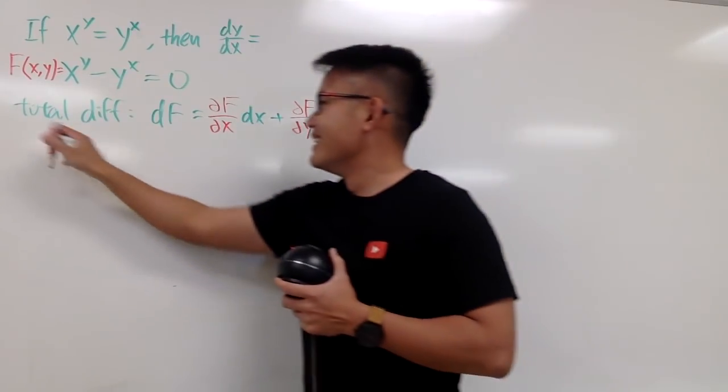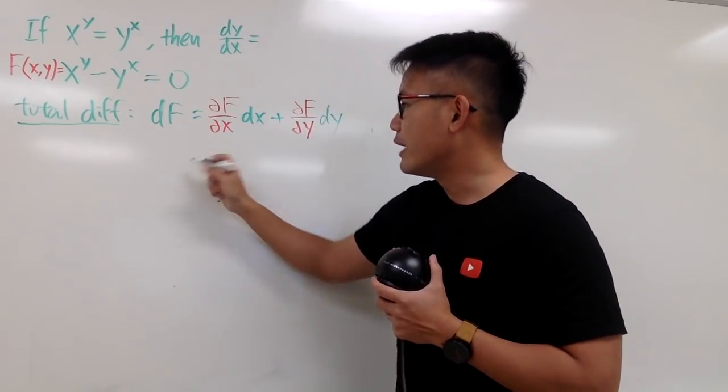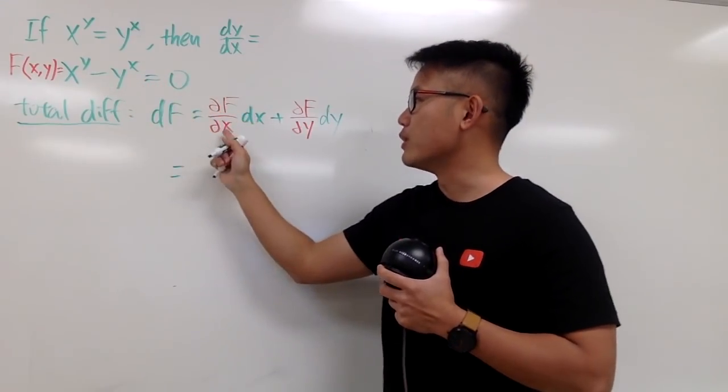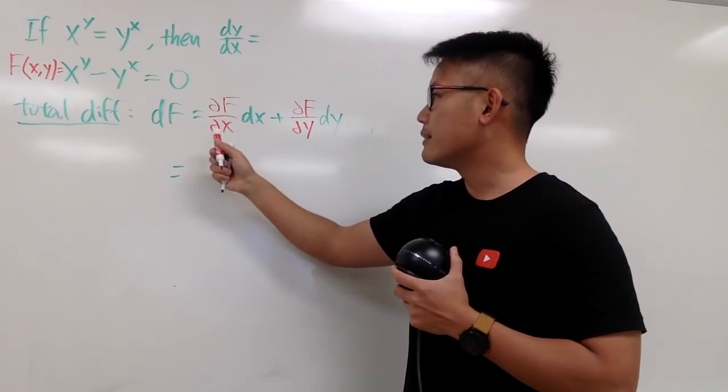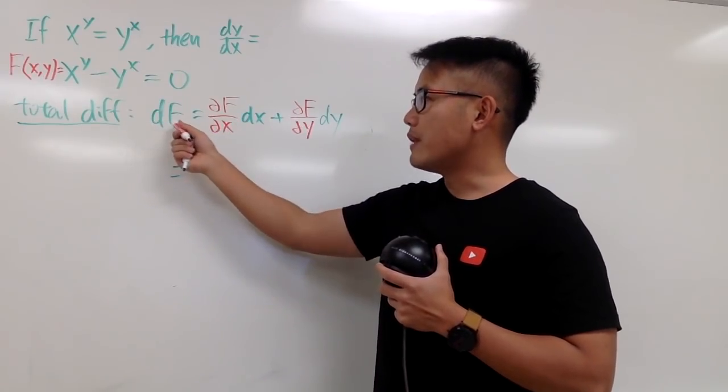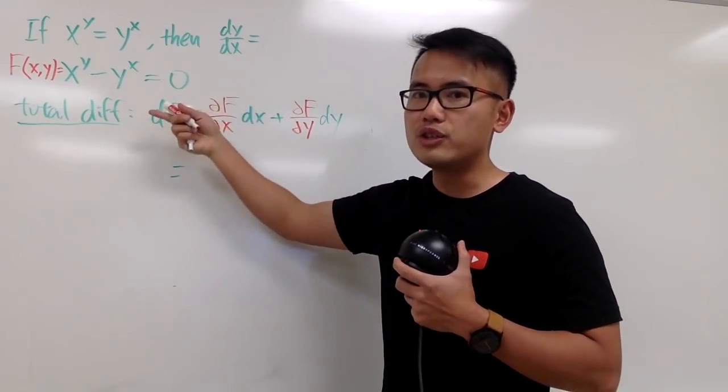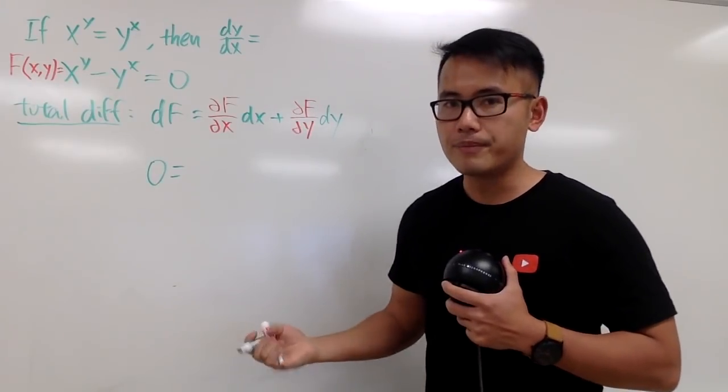Now, here is the fun part. Let's focus on to get the total differential. To do so, we just have to get the partial of F with respect to x. First of all, partial of F, you should see that this is equal to 0. If you have any number, when you differentiate the constant, you get 0 anyway.